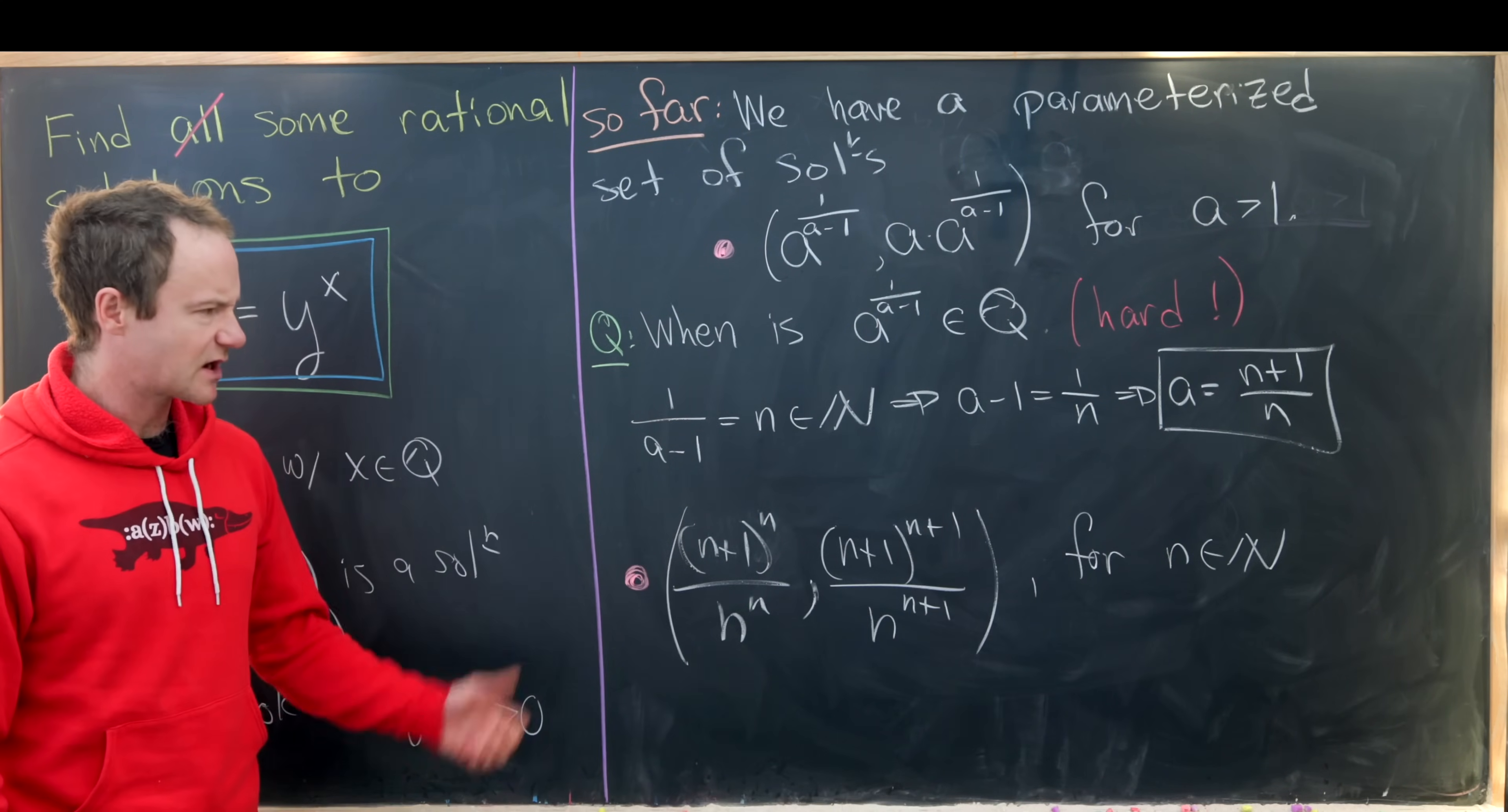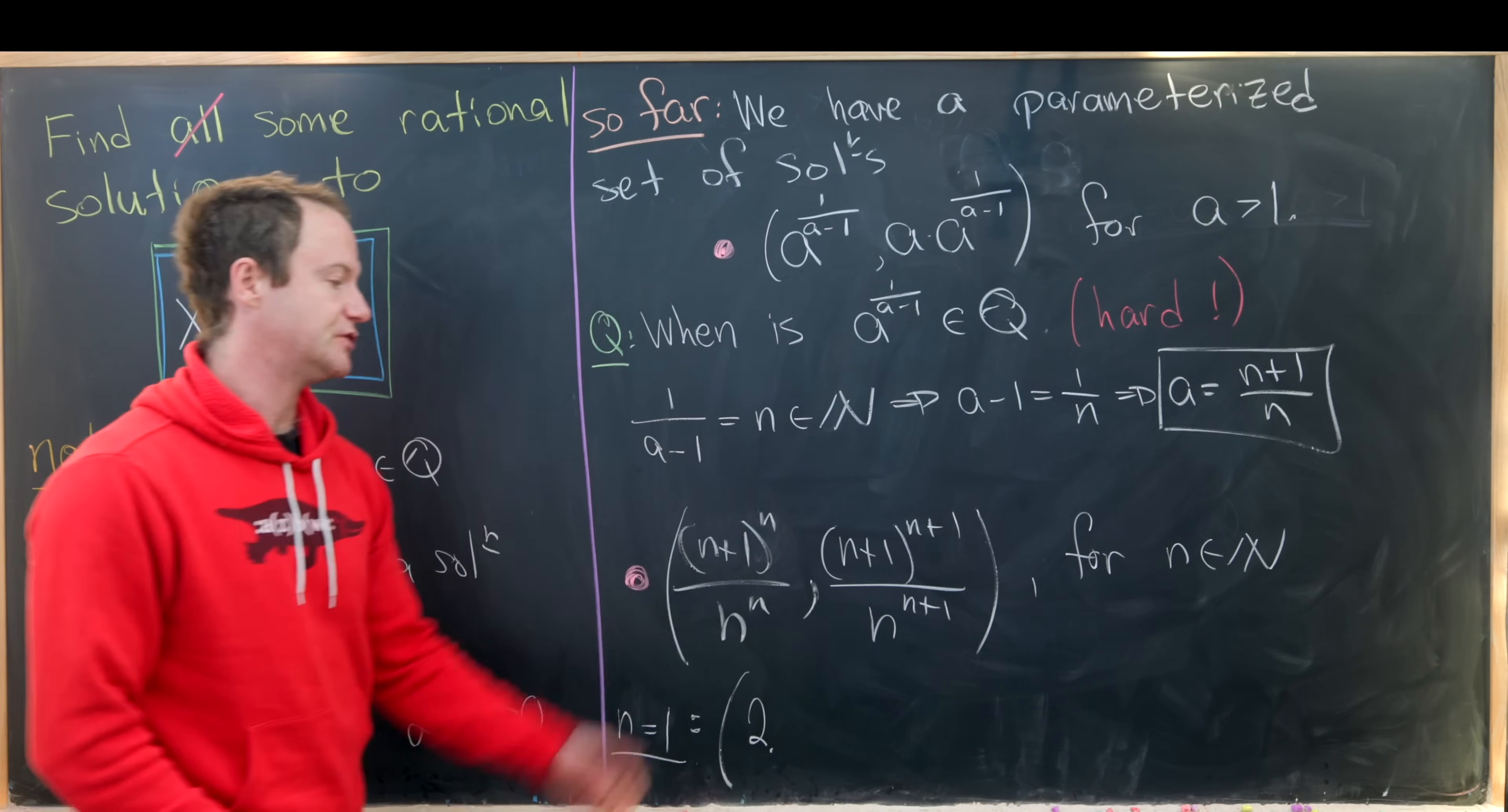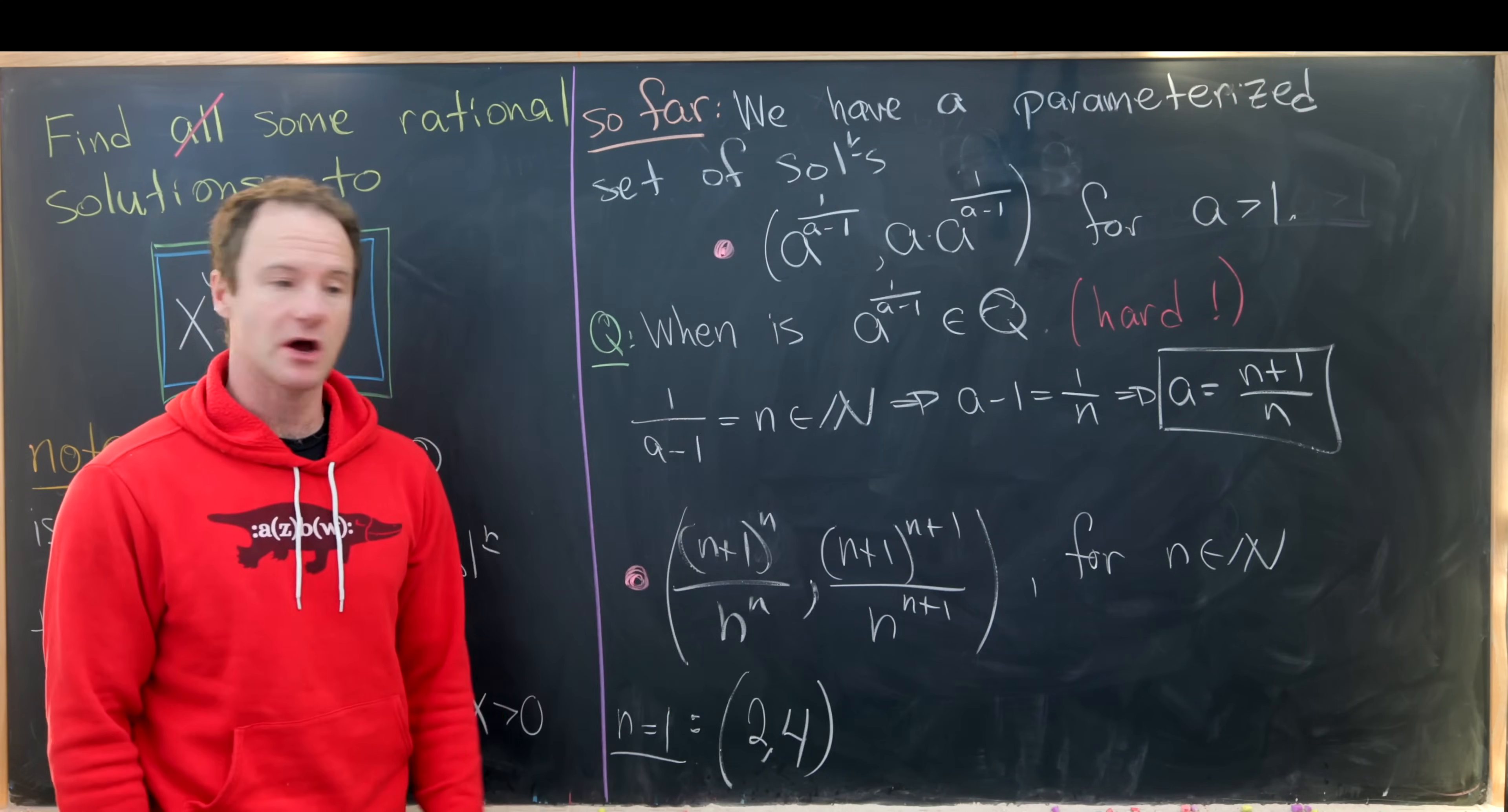So let's look at a couple of cases of this and see what it looks like. So let's see, when n is equal to one, what do we get? So we'll have two to the one over one to the one. So that's just two. Then we'll have two to the two, that'll be four. So we have two, four. Let's make sure that makes sense. We'll notice two to the four is 16 and four to the two is 16. So we're good to go there.